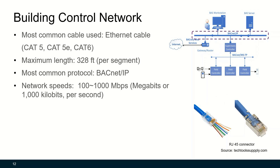The building control network connects BAS workstations, BAS servers, and supervisory controllers. The most commonly used cables are Ethernet cables such as CAT5, CAT5e, or CAT6. The maximum length is 328 feet per segment. The most commonly used protocol is BACnet IP.